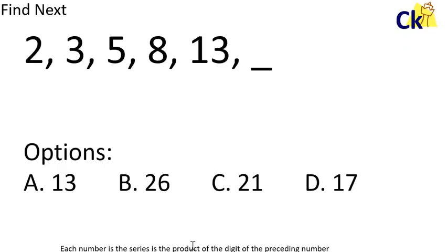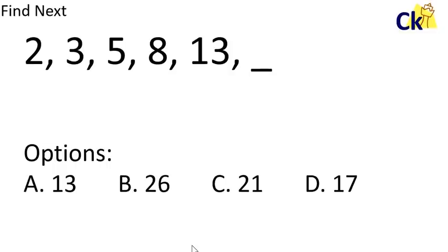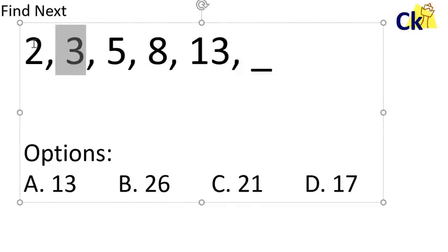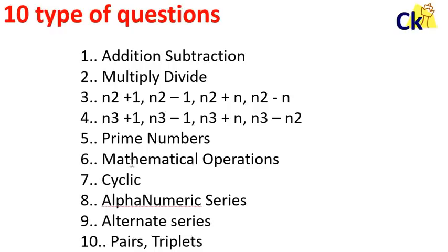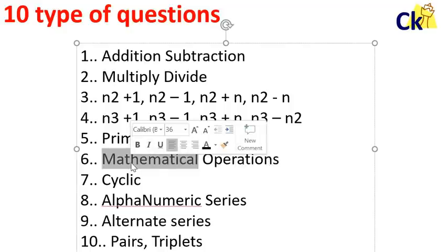So this is one more question I want you to try today. 2 plus 1 is 3. This is the sum of the last two terms. 2 plus 3 is 5. 5 plus 3 is 8. 8 plus 5 is 13. And 13 plus 8, it has to be 21. The answer is 21. So all these kinds of questions are part of mathematical operations.